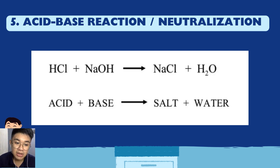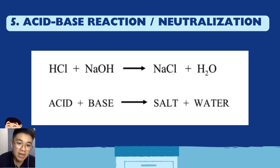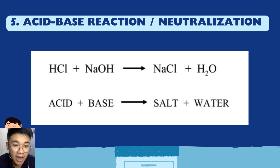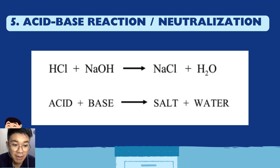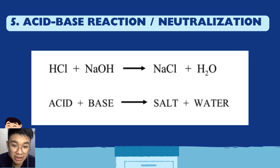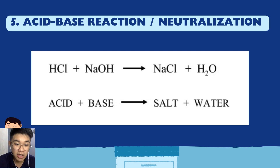The key thing to remember for acid-base reactions: on the reactant side (left), there is an acid and a base. On the product side (right), there is always a salt and water. Note that the salt is not always NaCl — there are different types of salts — but it will always be salt and water.